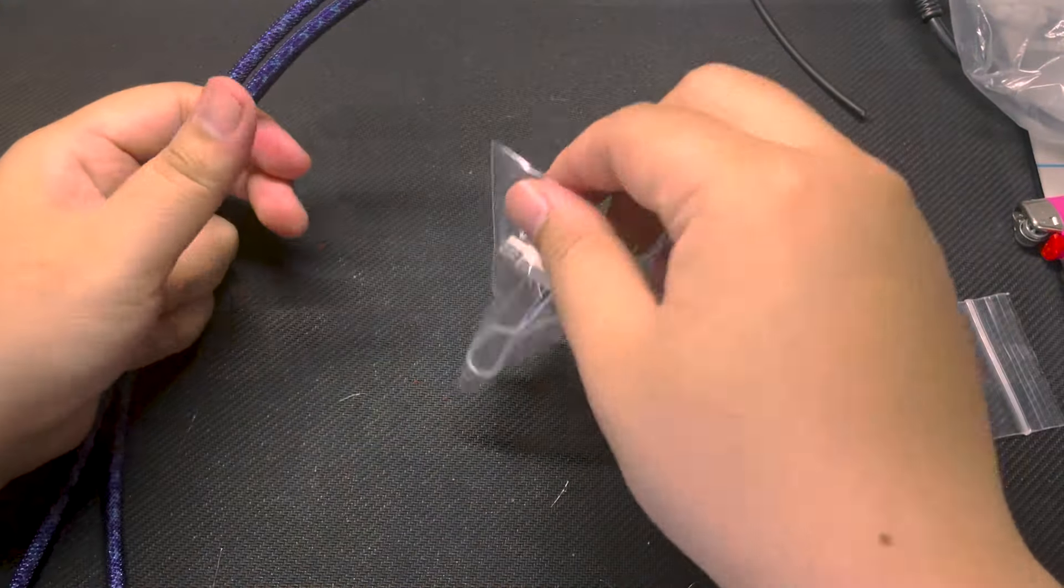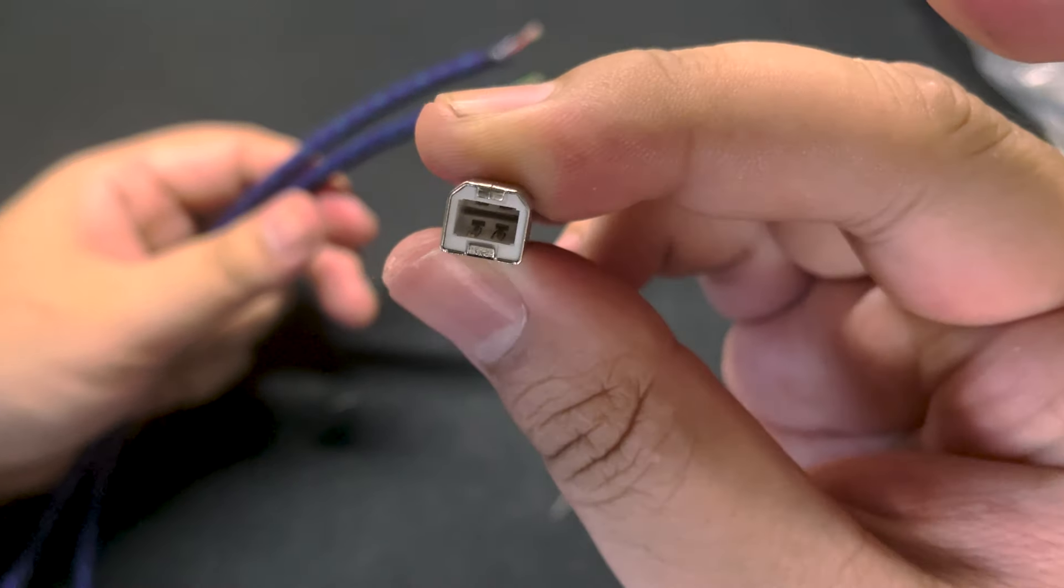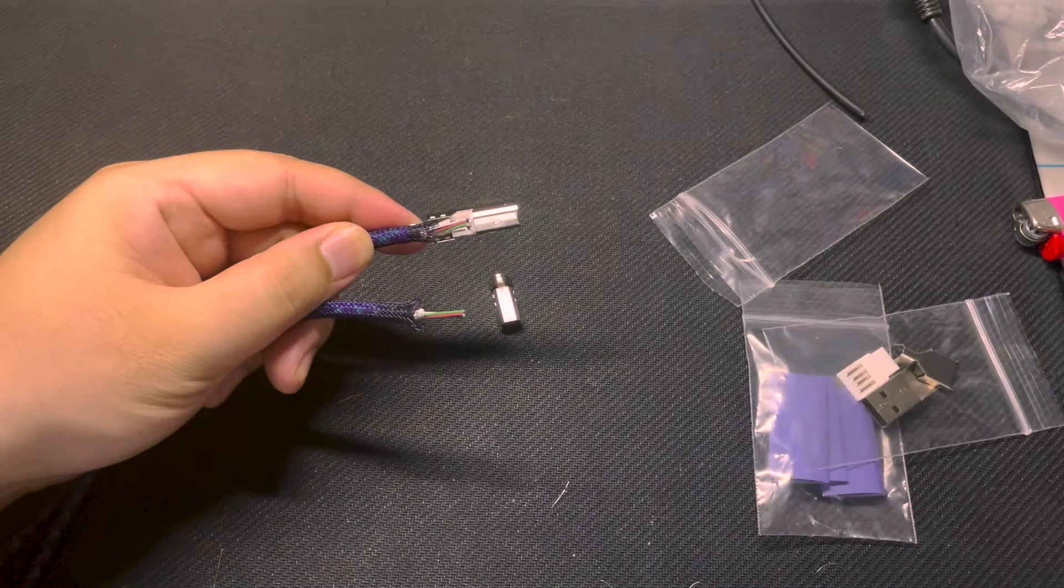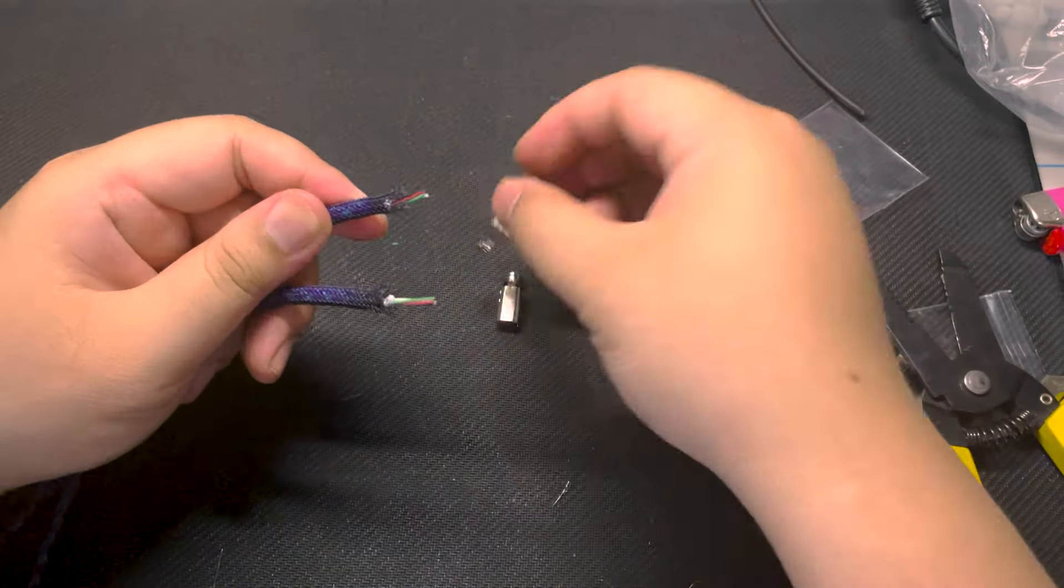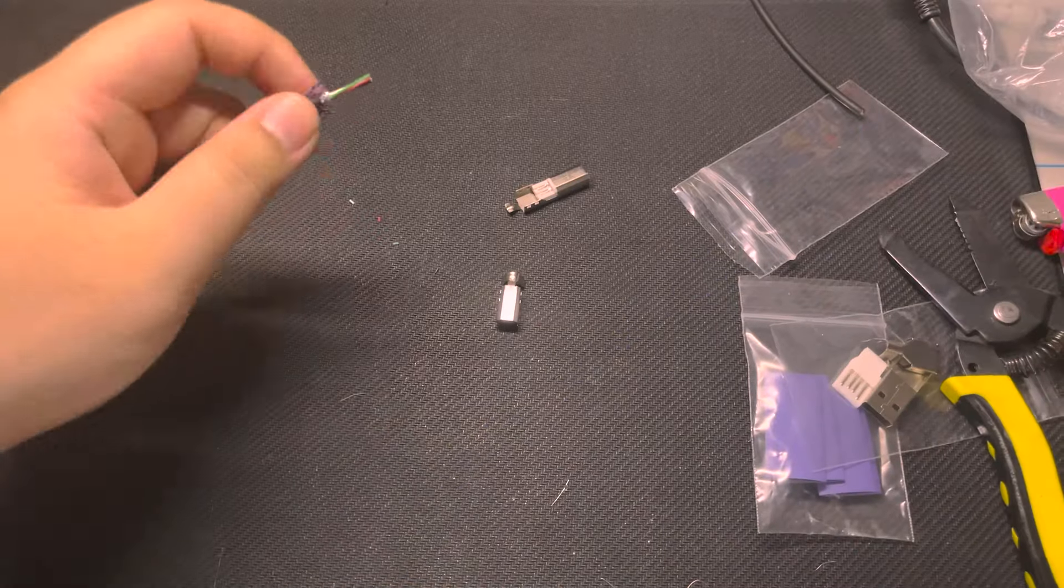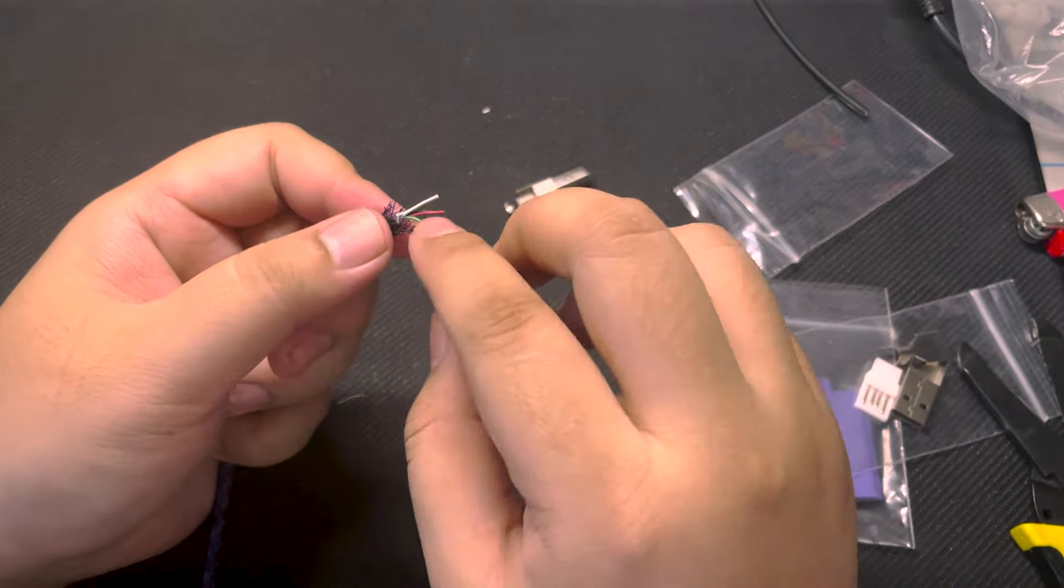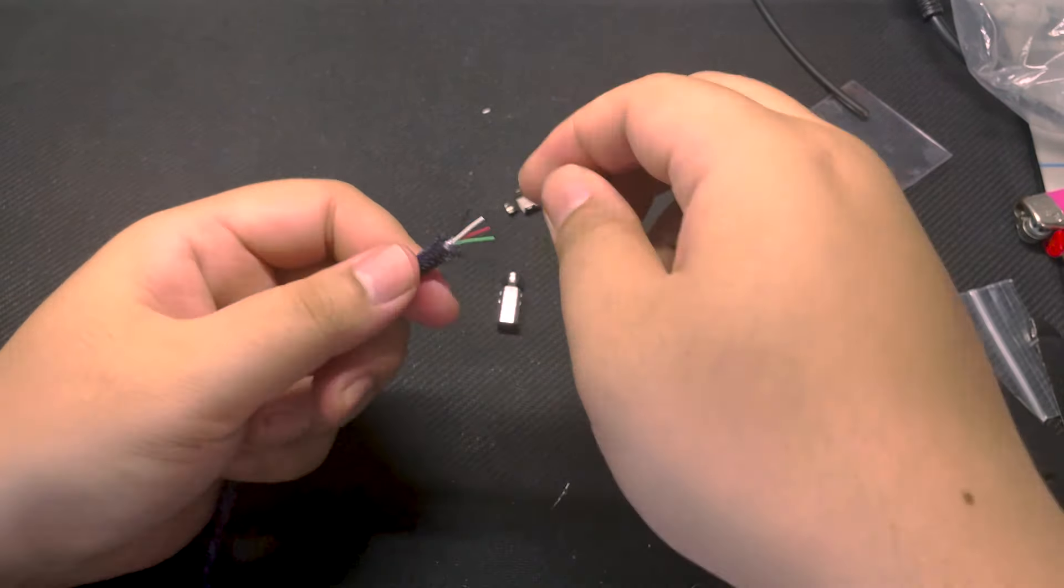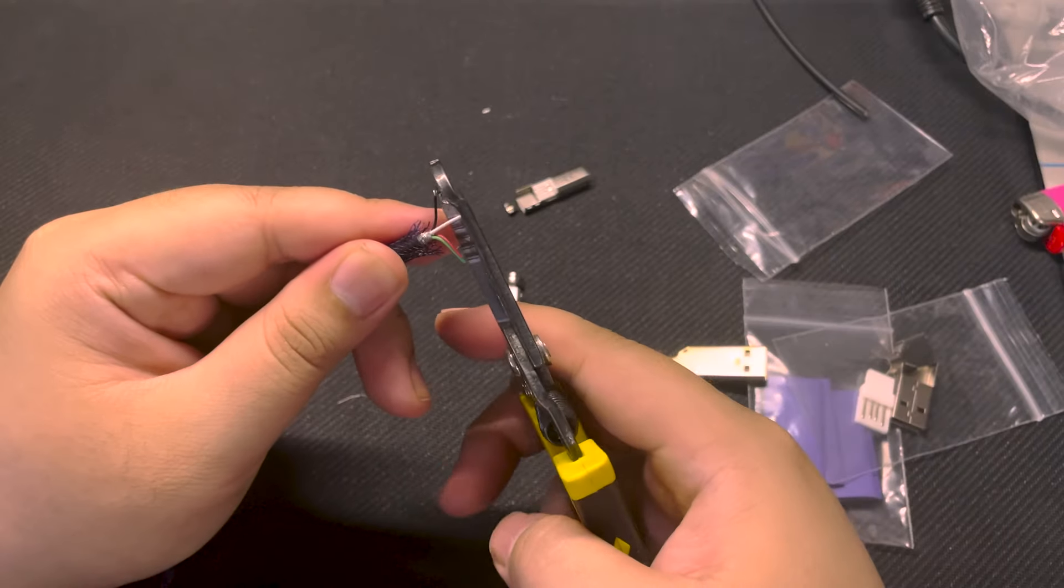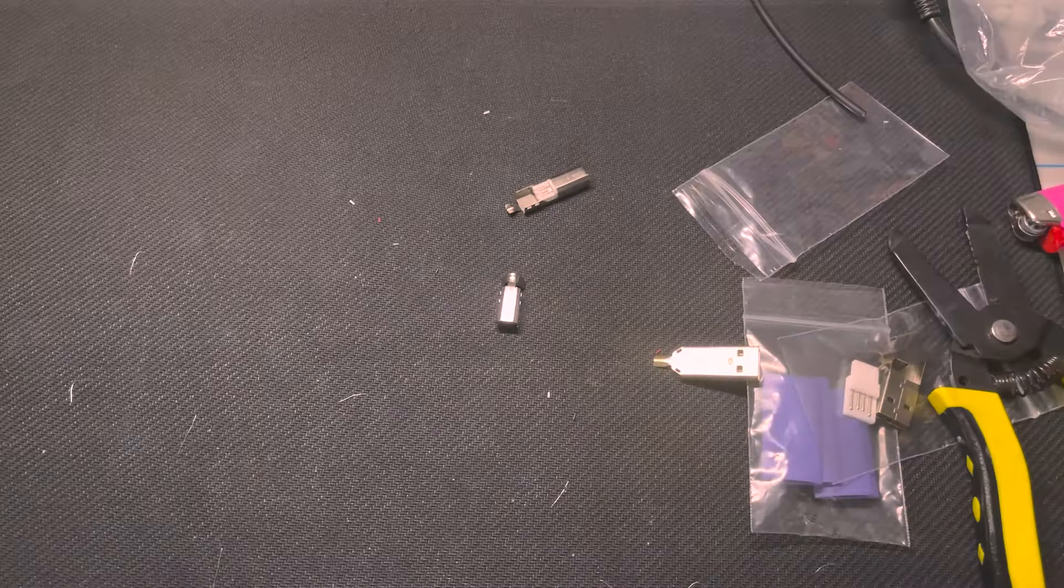As we get prepared to solder our cable together, I'm gonna go ahead and start sizing up how much wire we actually need from our cable to solder it onto our connector. So here I have the type B connector, just finding out where it's gonna be placed on the cable so once it's all soldered in we have a good place of where we're gonna crimp it. We're gonna do the same thing with the USB A side as well. Next off we're gonna go ahead and expose enough of the conductive part of the wires to solder on to our connectors.